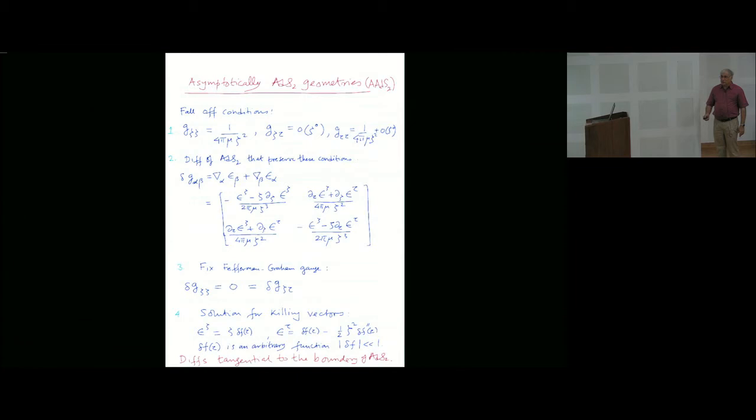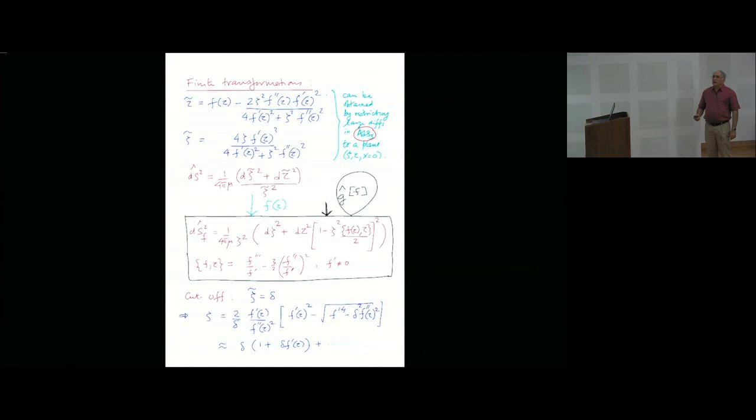The solution for the asymptotic Killing vectors is precisely given by xi times delta f. This is not that other delta. This is small f. And this is small f minus this part. You can check very easily that if you make this diffeomorphism, the boundary of the right-half Poincaré plane, that is xi equal to 0, maps into xi equal to 0. So that's nice. This is the finite transformations.